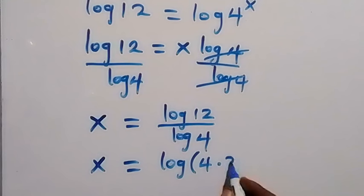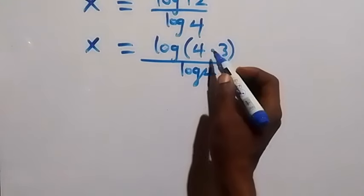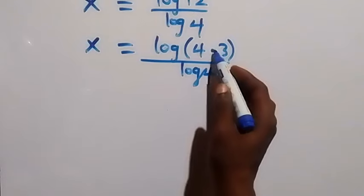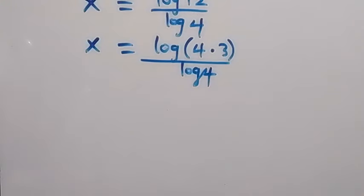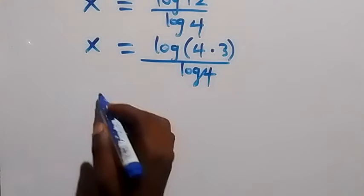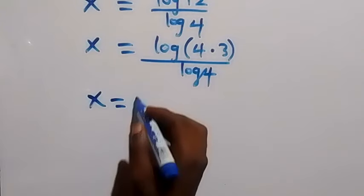Then all over log 4. From here we apply the law of logarithm and the product becomes addition of two logs. We have x equals log 4 plus log 3, then all over log 4.